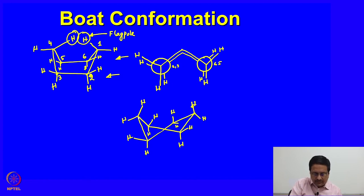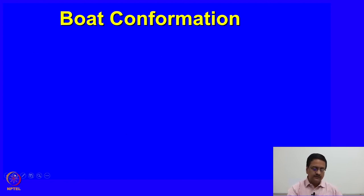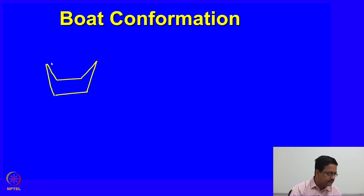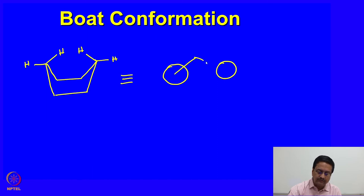In this particular conformation, this bond is above the plane of the projection and that bond is below the plane of the projection, and it is a twist-boat conformation. As we have seen in the boat conformation, the hydrogen atoms are on the flagpole and they interact very closely, causing a significant amount of steric strain and also torsional strain in the molecule, because if you see the molecule in the Newman projection, it looks like there are two eclipsed butane groups present next to each other.